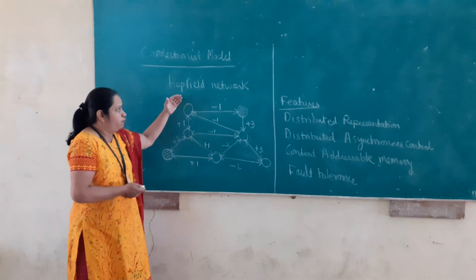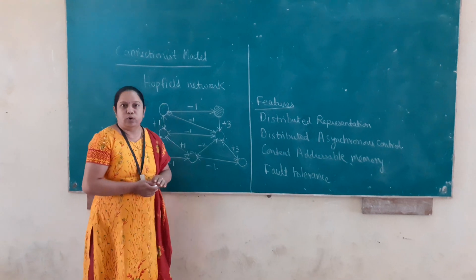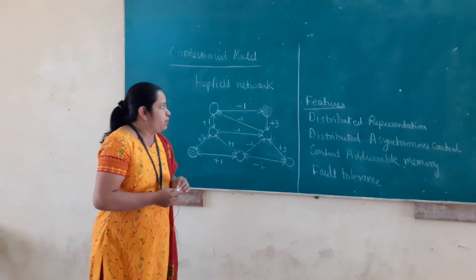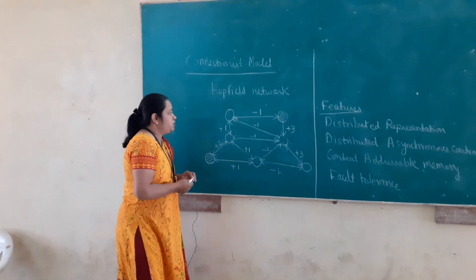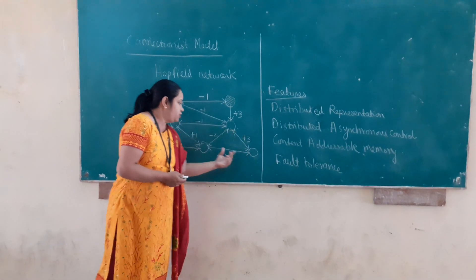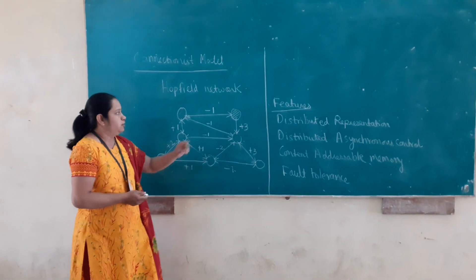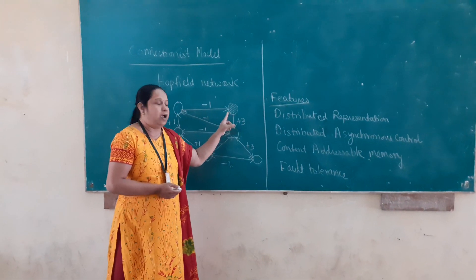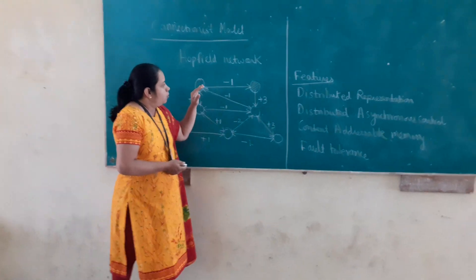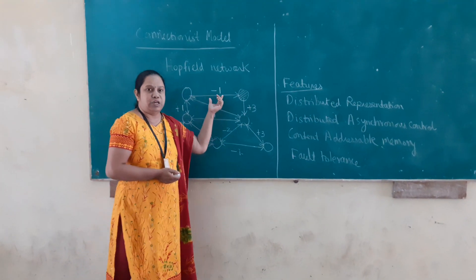So this is an example of Hopfield network. The Hopfield network is a neural network which works on the theory of memory. It comprises processing elements. These are called processing elements, and they are either in an active state or inactive state. This indicates an active state and this indicates an inactive state. All these processing elements are connected to each other and there is a weight associated with each connection.